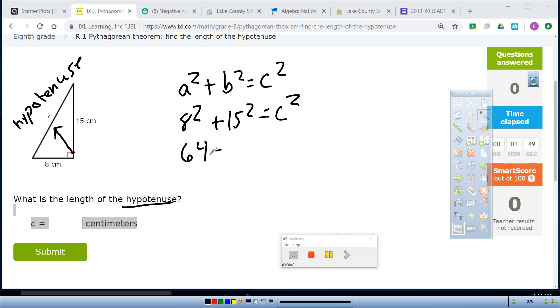So this is 64 plus 225, and that is equal to C squared. When I add those together, I get 289 equals C squared.